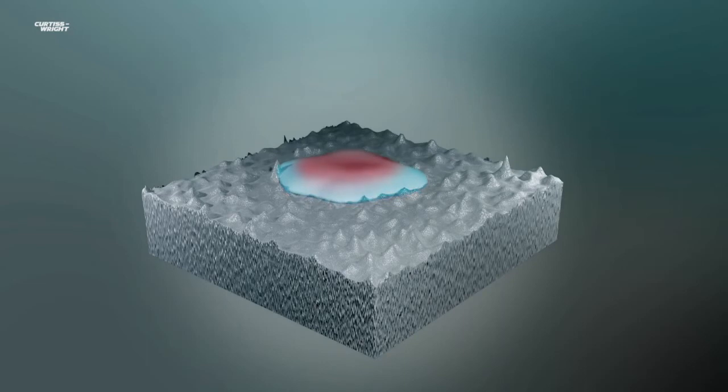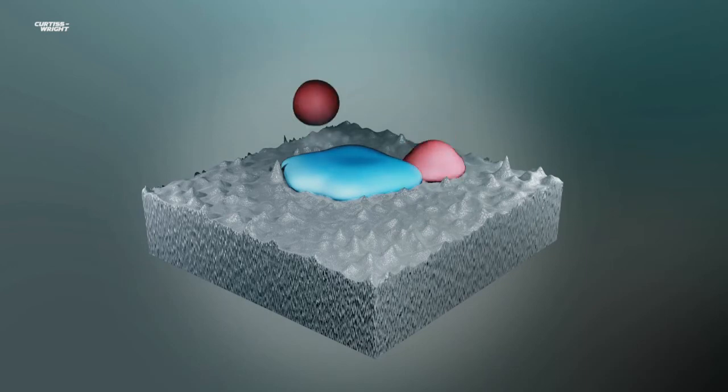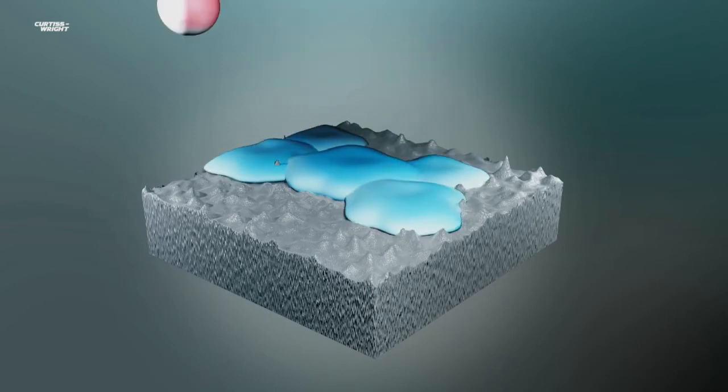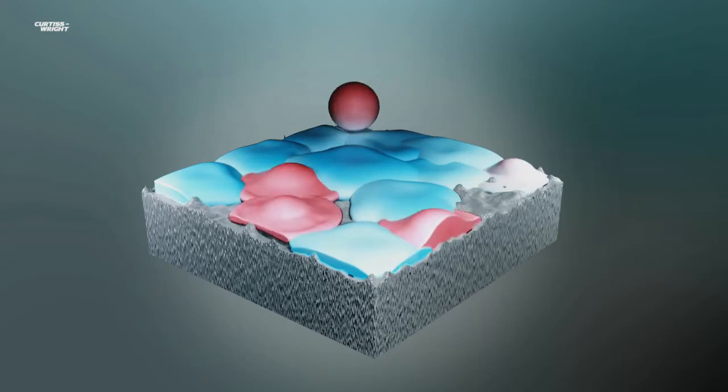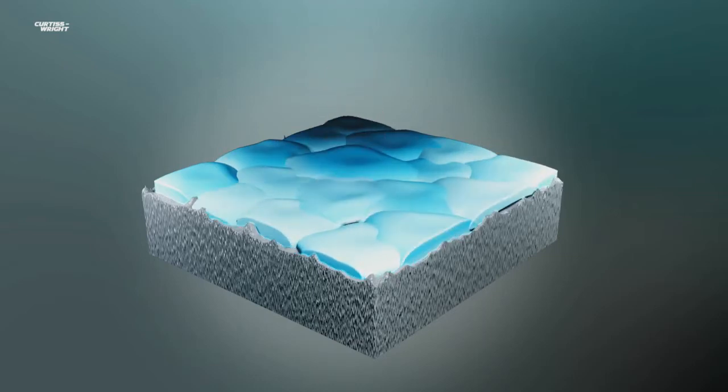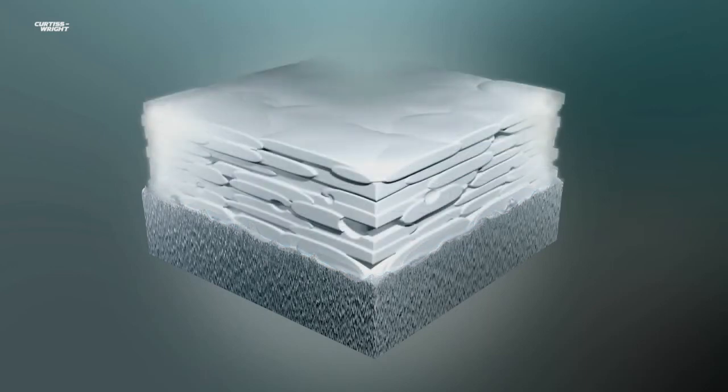When molten particles impact with the prepared surface, they begin to cool and contract, forming a strong mechanical bond with the substrate. The coating is built up in layers until the required thickness is reached.